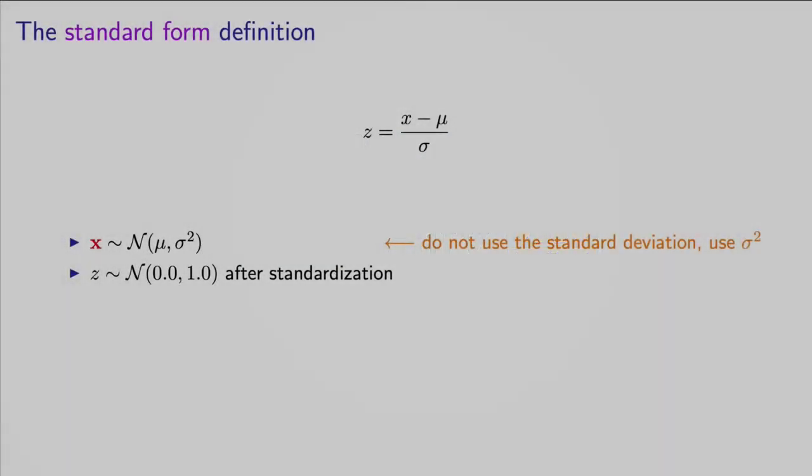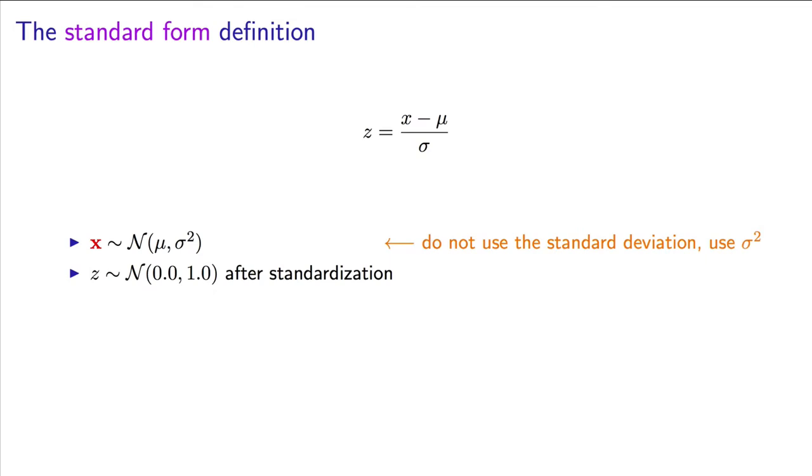We are going to introduce some basic notation here for the normal distribution. The first is this cursive N character. It says the variable x comes from the normal distribution with mean of mu and variance of sigma squared. Notice the second term is variance, not standard deviation.